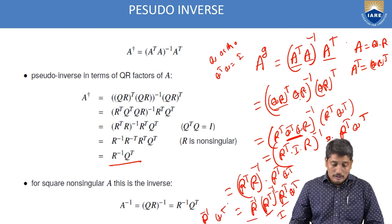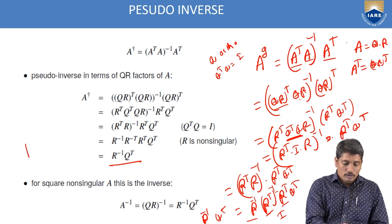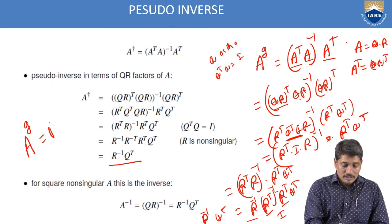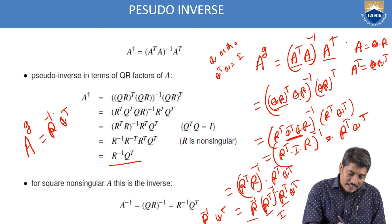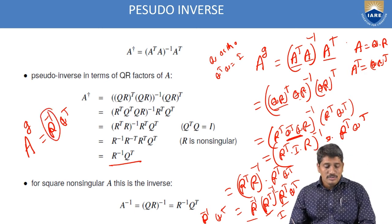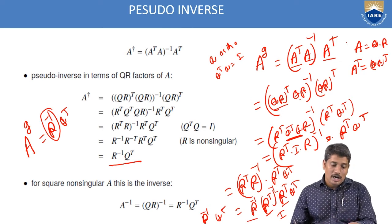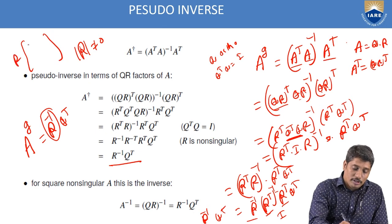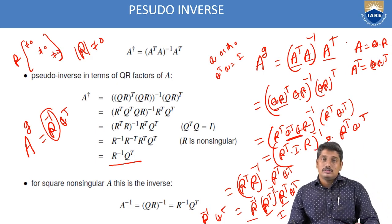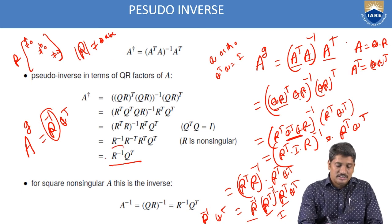This is the formula for calculating pseudo-inverse using QR decomposition: A^G = R⁻¹Qᵀ. Your question might be: how can we guarantee the existence of R⁻¹? R⁻¹ exists only if R is square and non-singular. In QR decomposition, R is always a square matrix, and the determinant of R will always be non-zero because the diagonal elements of R are all non-zero. For an upper triangular matrix, the determinant equals the product of diagonal elements, which is non-zero, so R⁻¹ definitely exists.